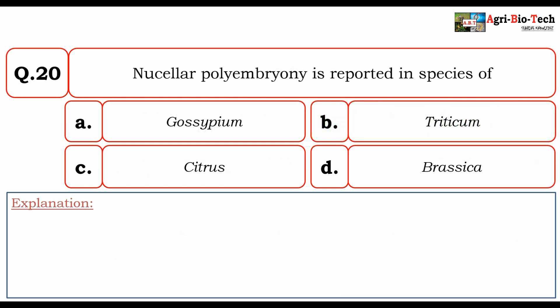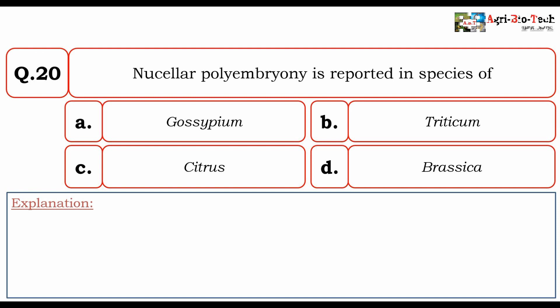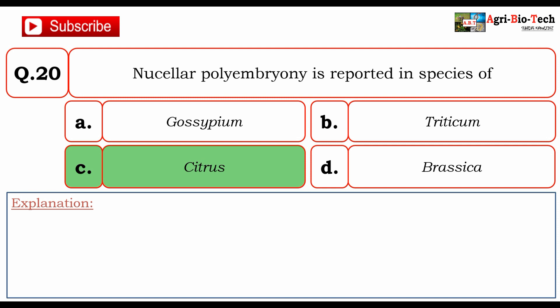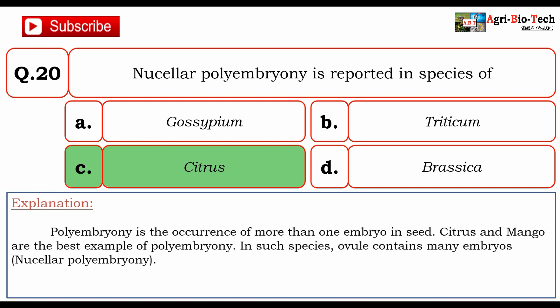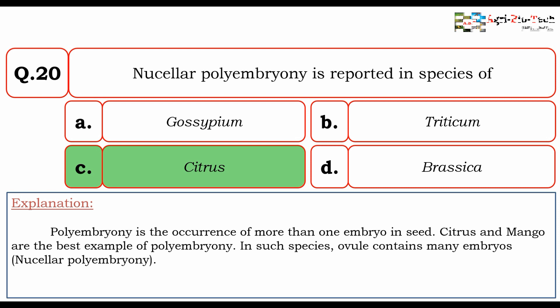Nucellar polyembryony is reported in species of: A. Gossypium, B. Triticum, C. Citrus, D. Brassica. The correct option is C. Citrus. Polyembryony is the occurrence of more than one embryo in a seed. Citrus and mango are the best examples of polyembryony. In such species, ovules contain many embryos, i.e., nucellar polyembryony.